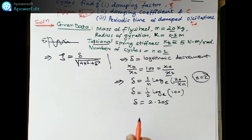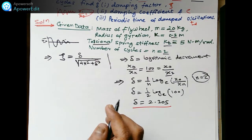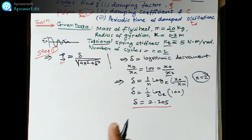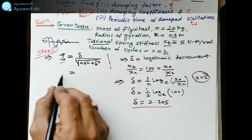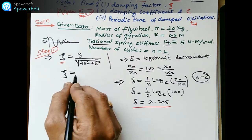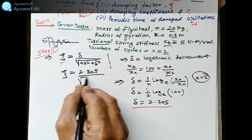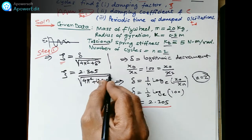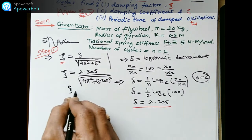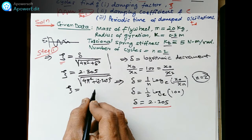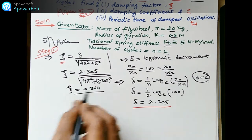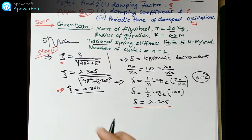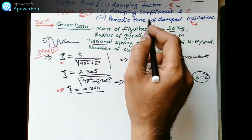With δ = 2.305 calculated in Step 1, we now find the damping ratio zeta. Substituting into zeta = δ / √(4π² + δ²): zeta = 2.305 / √(4π² + 2.305²) = 0.344. This is the damping factor.